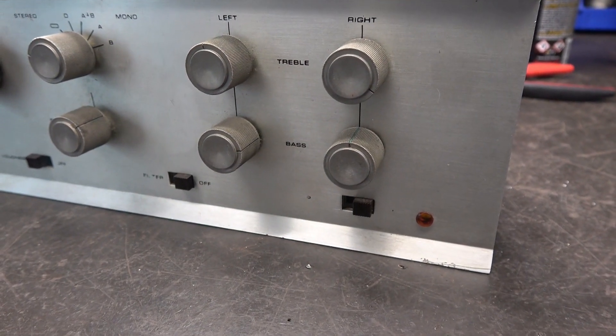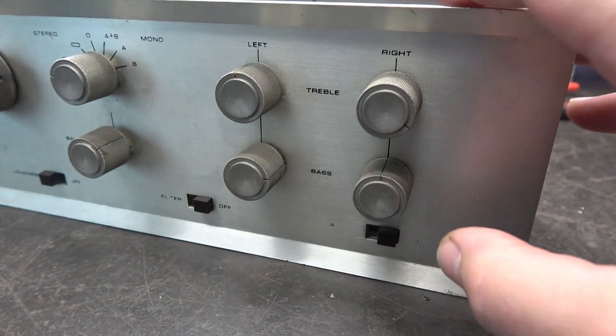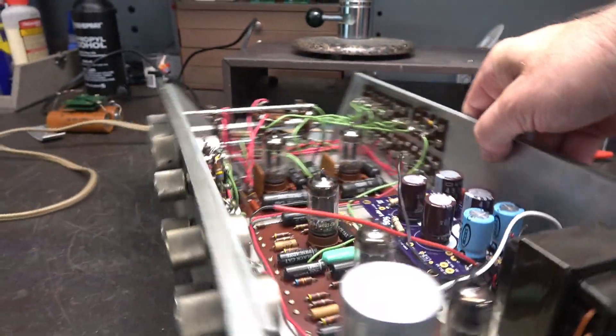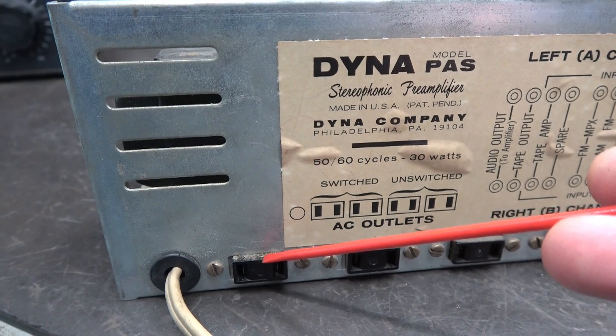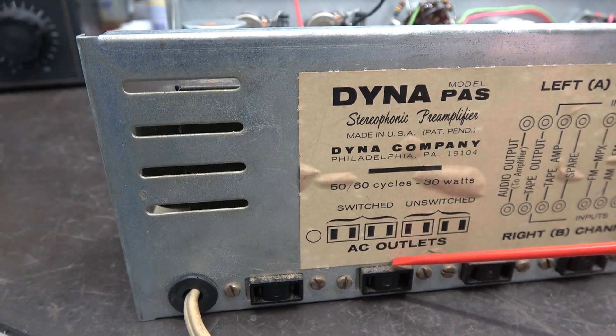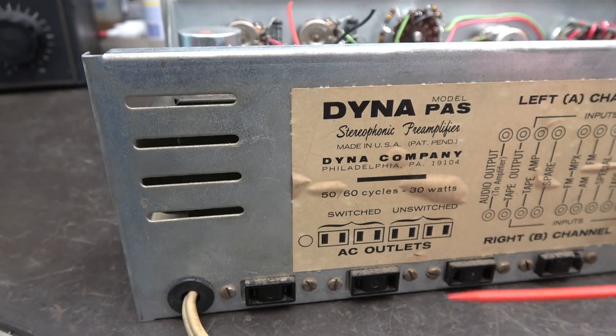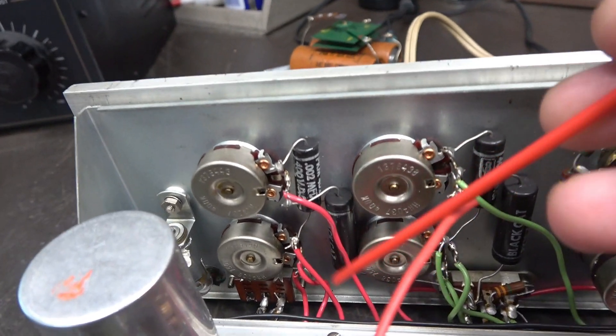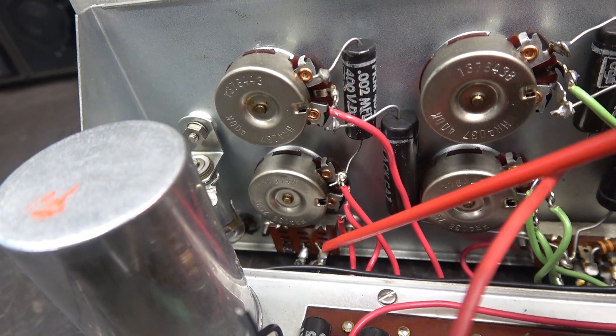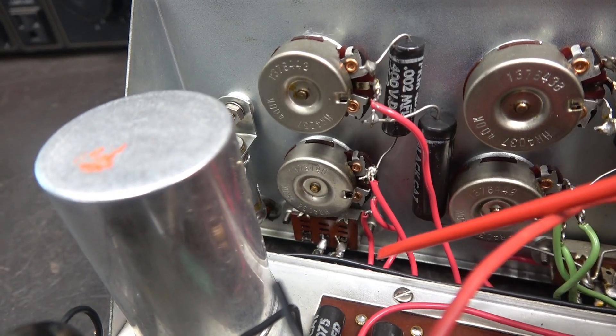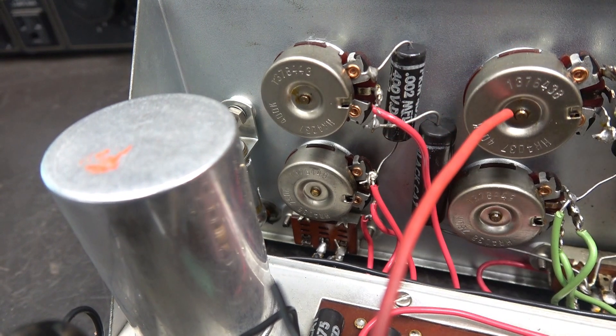The other high failure rate item on the Dynaco is this little slide power switch. The reason it fails is because at the same time that you're turning on the preamp itself, you're also turning on these switched outlets, and most people connect their power amps to these outlets. If you have the ST70 you're going to use one, if you got the mono blocks you're going to use both, and that puts too much current demand on that slide switch. Just a little tiny power switch is probably only rated at about 2 amps if you're lucky, and when that fails it's kind of a pain to find and replacement is not that easy either, you have to pull the whole front panel off.